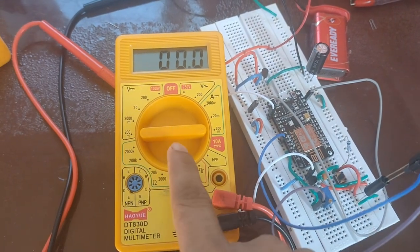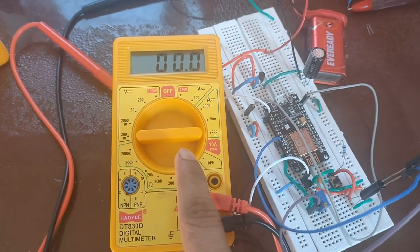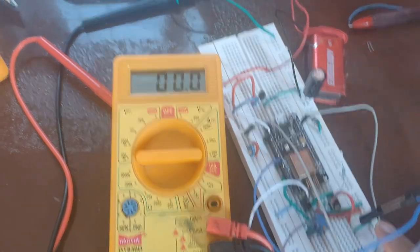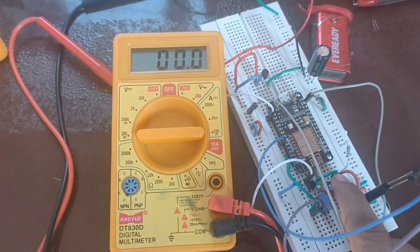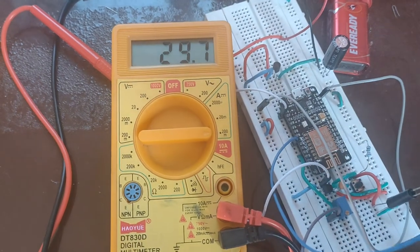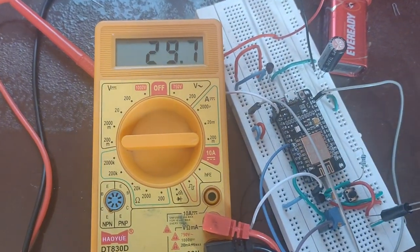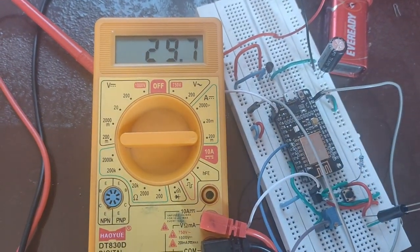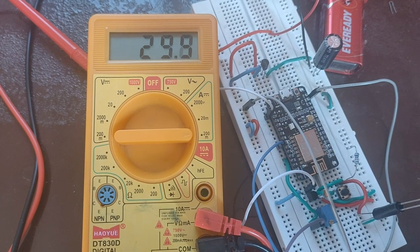Now this multimeter will show current in milliamperes. Now I am pressing the momentary switch. Now the controller has started. Now the current is nearly 30 milliamperes.